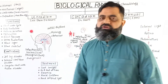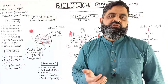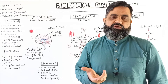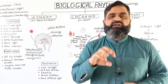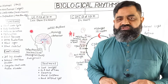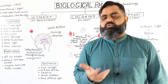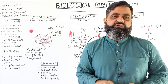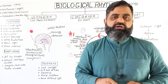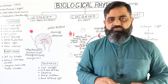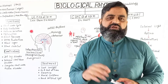Delayed sleep phase disorder is a major problem in the modern era — young people are going to bed very late and disturbing their sleep cycle. People who work night shifts also disturb their circadian rhythms. Irregular sleep-wake rhythm disorder occurs when people sleep and wake at irregular times. We need to go to bed around 9 or 10 o'clock and wake up in the morning — this is a regular sleep pattern.